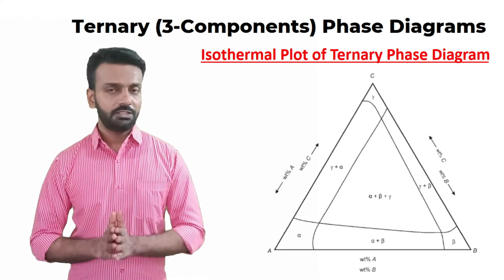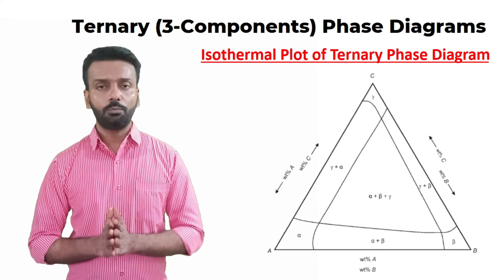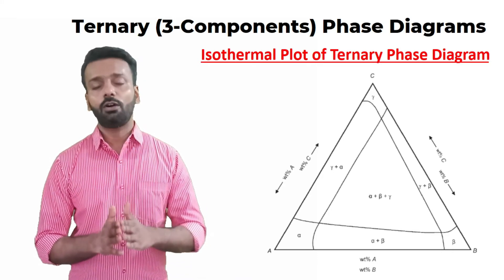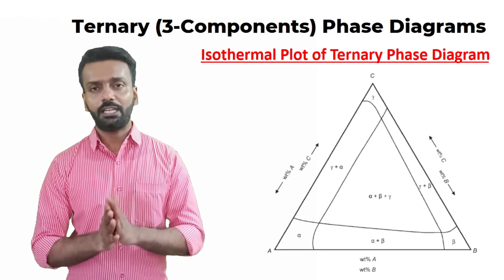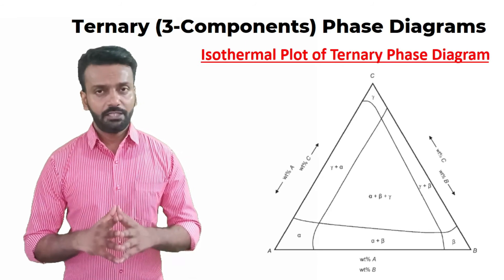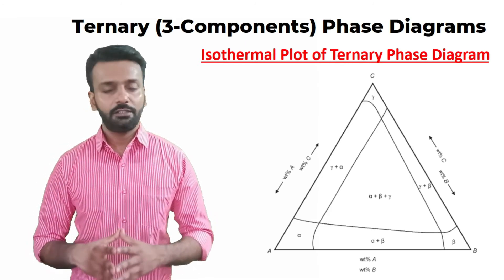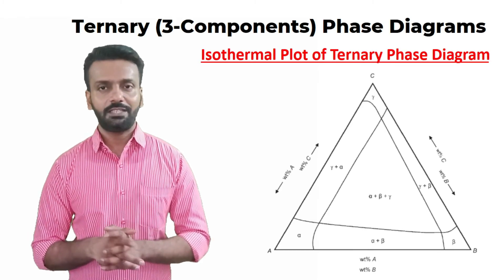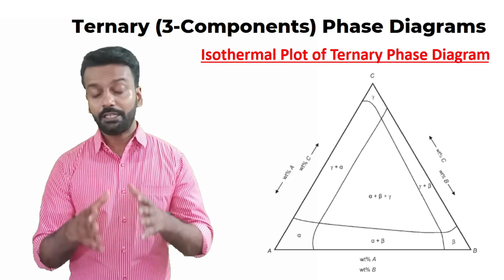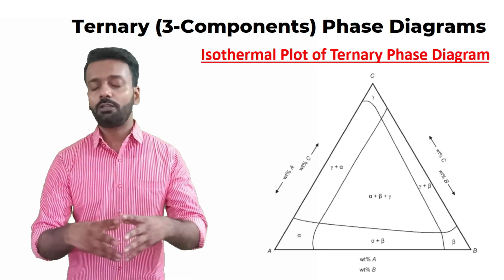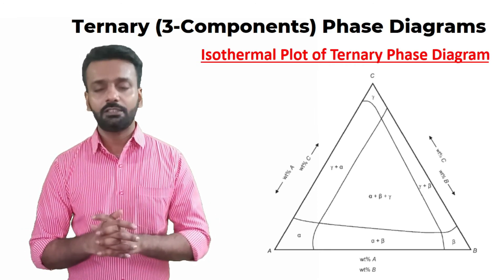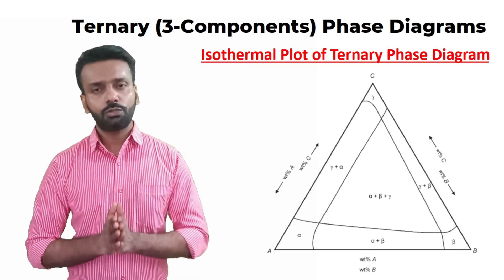The three corners of the triangular isothermal plot represent the three different compositions in the ternary phase diagram, and each side of the triangle represents a binary phase diagram — the combination of two components. To find out what phase is present at a particular point, you can look at the isothermal plot where it becomes easier to identify, at what composition and temperature, which phase is existent. The method of reading this based on temperature and composition will be covered in a separate ternary phase diagram video.